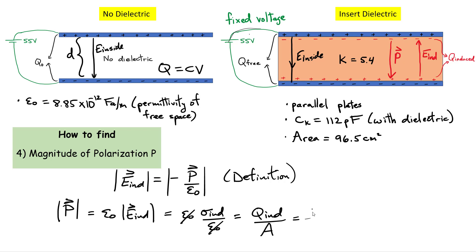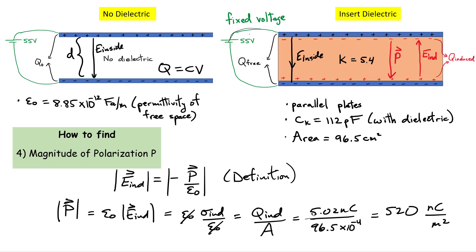Substituting values: P = 5.02 nanocoulombs divided by 96.5×10⁻⁴ m², which gives approximately 520 nanocoulombs per meter squared. Okay folks, that's it for me. Thanks for watching.